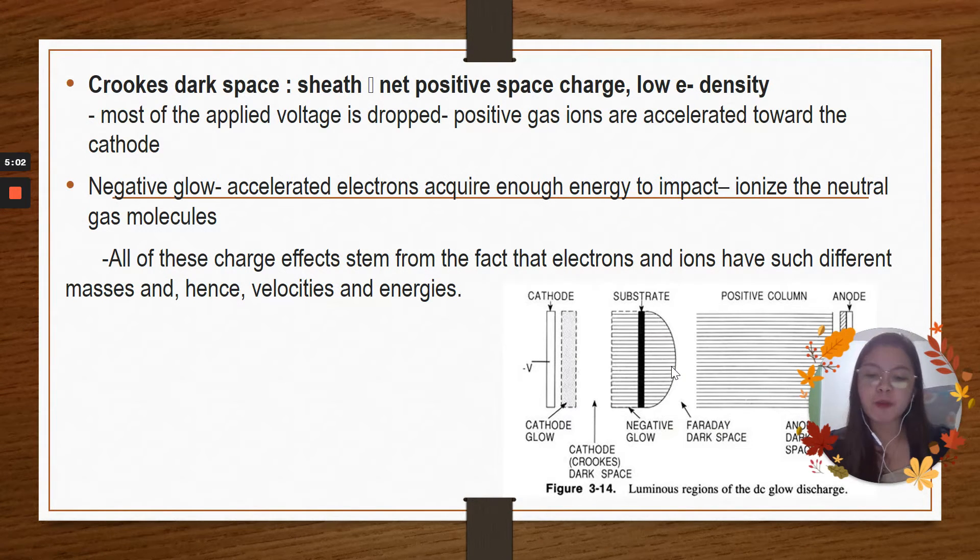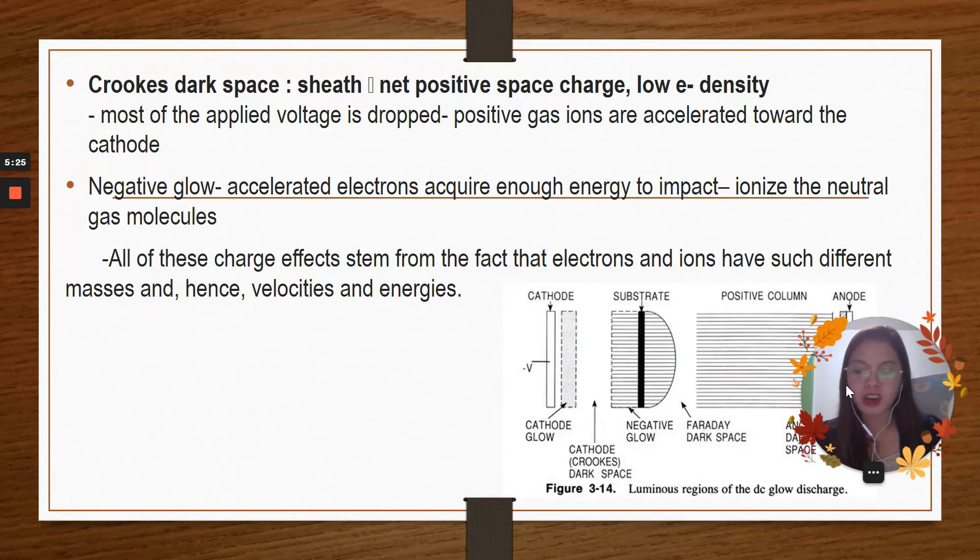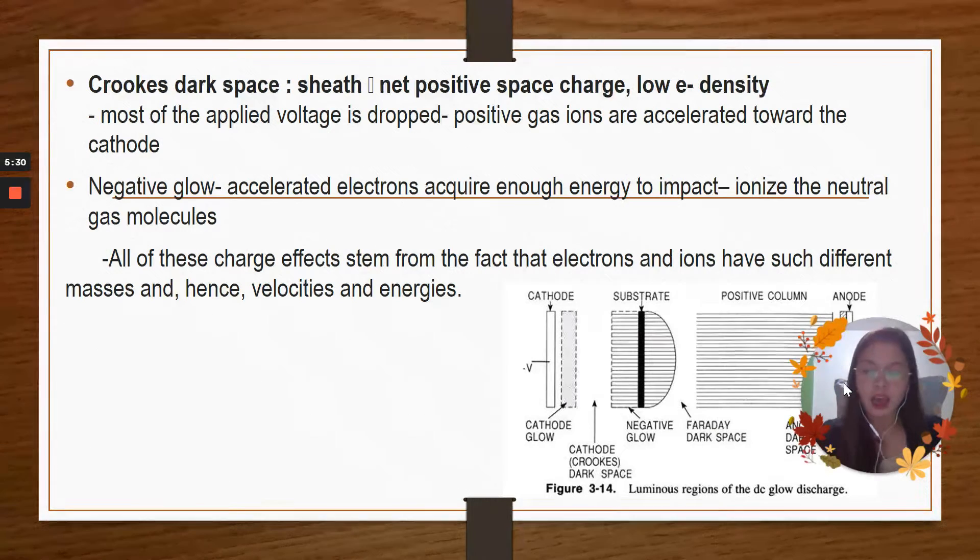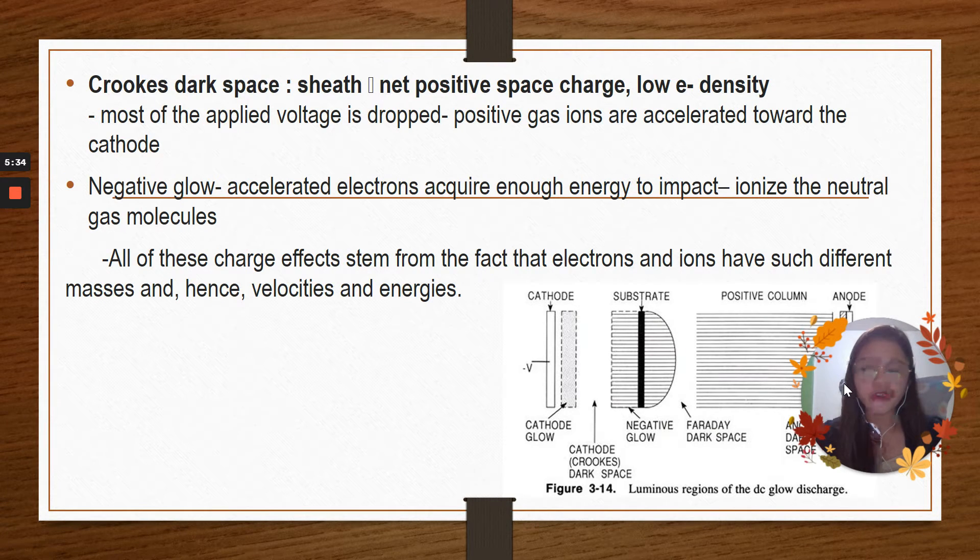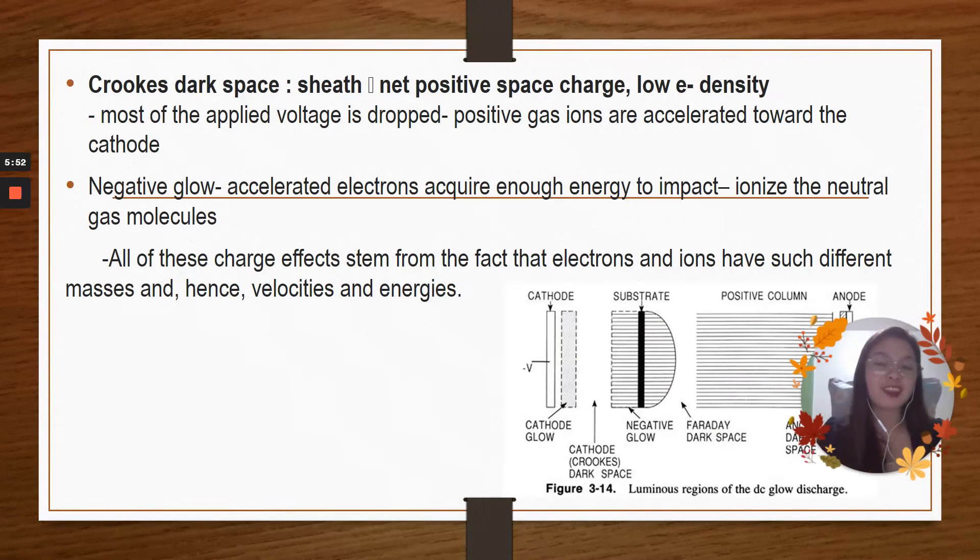For the Faraday dark space, it is a dark space of low light intensity between the positive column and the negative glow from the cathode in a vacuum tube. And we have also the positive column. For the positive column, it is a long glowing region which fills most of the distance between the electrodes. And of course, we have the anode dark space. This is the dark region between the anode glow and the anode in a vacuum tube occurring when the pressure is low. Of course, we have the cathode and anode. And again, the cathode is the negatively charged electrode by which the electrons enter the electrical device. And when we say anode, this is the positively charged electrode by which the electrons leave the electrical device.